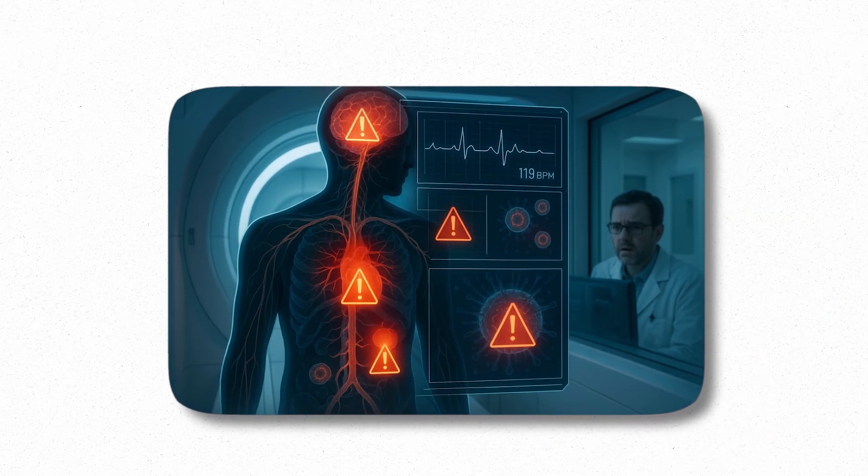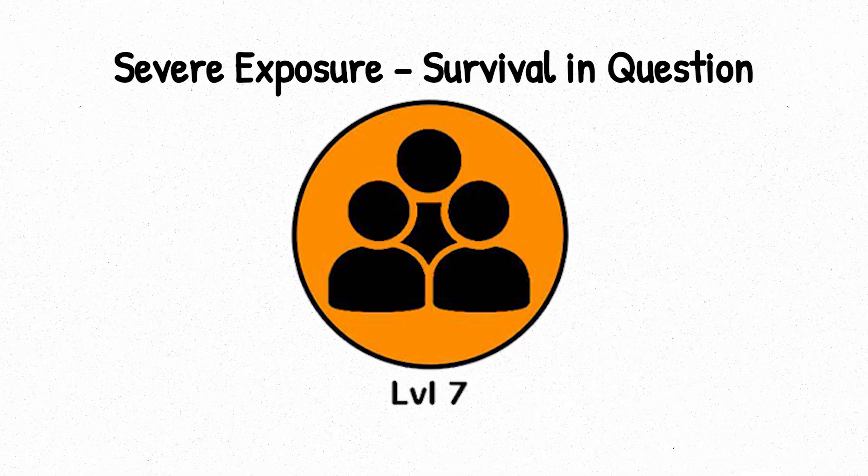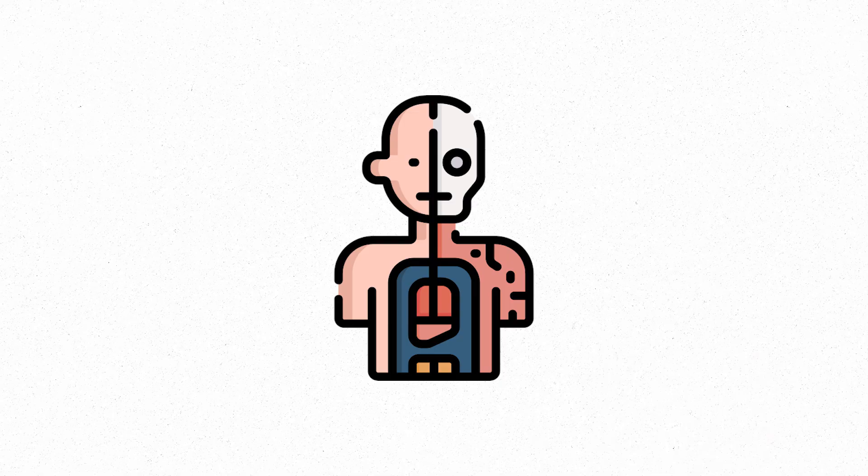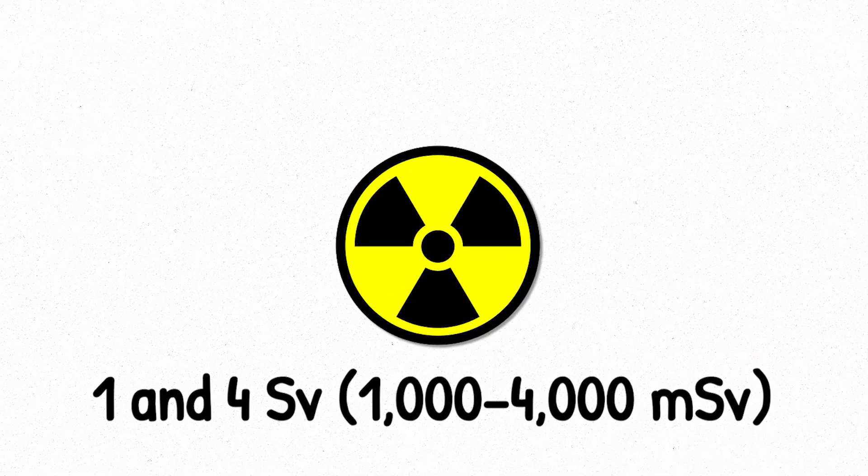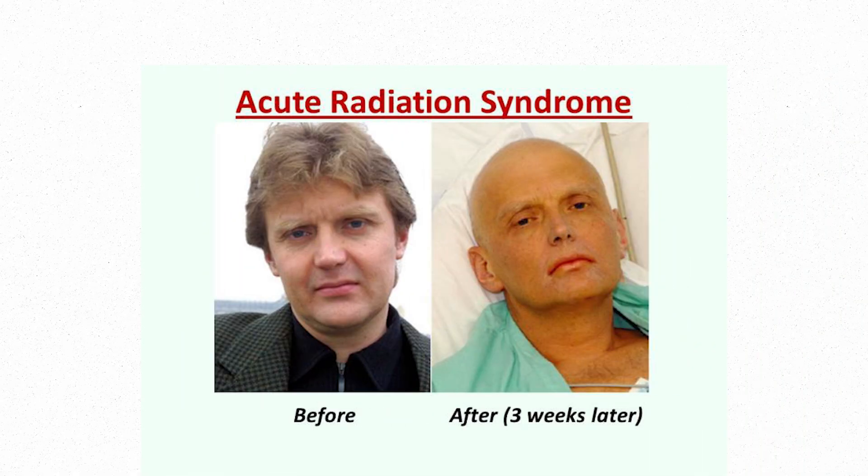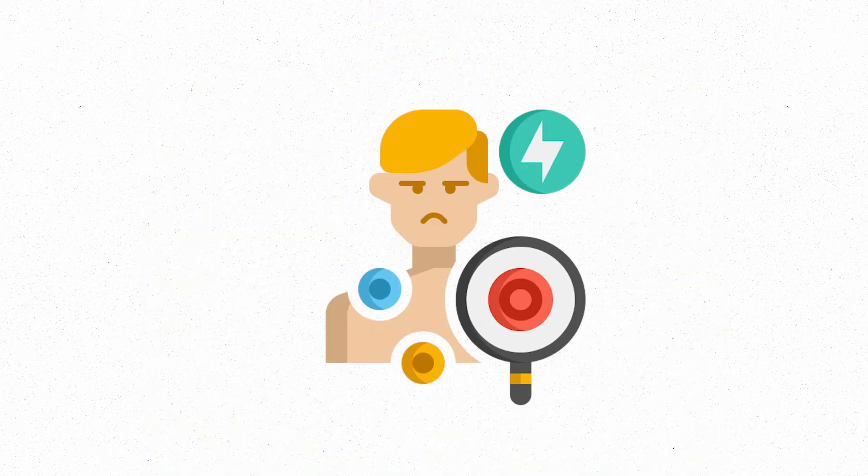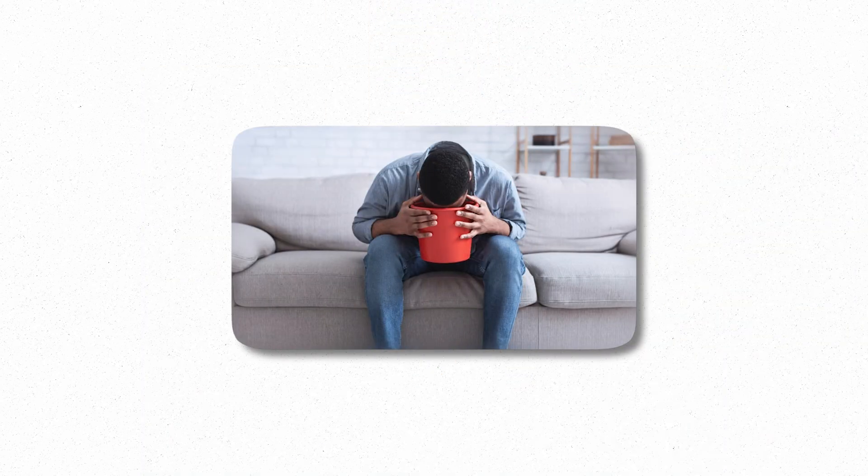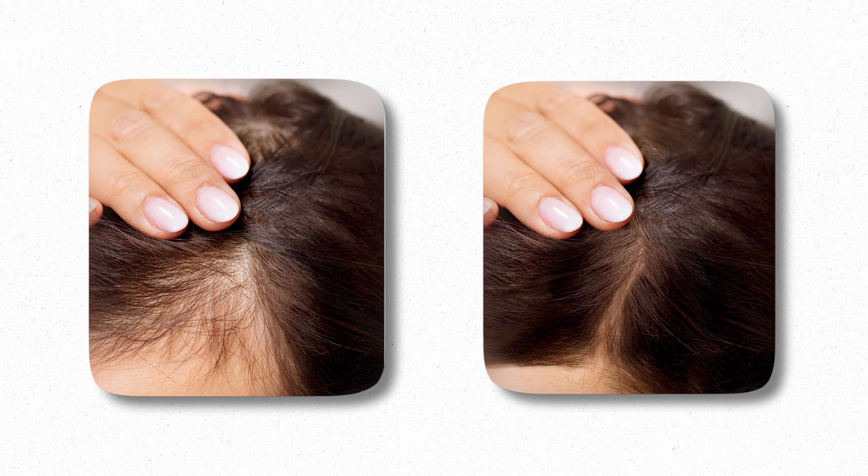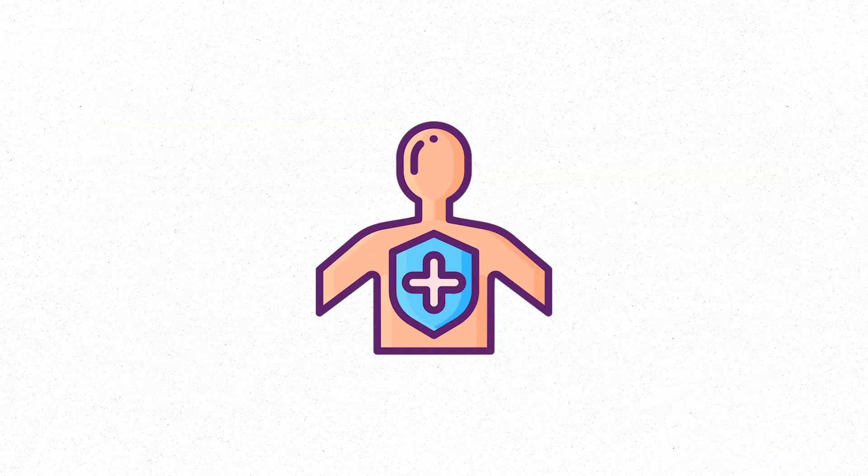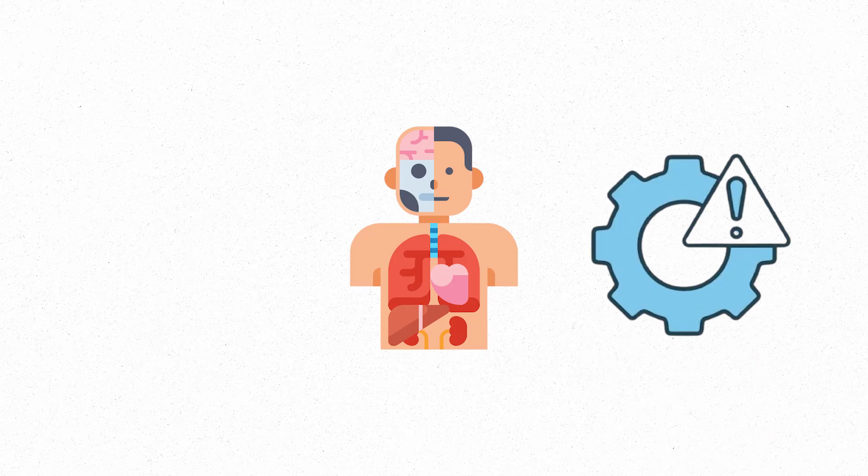Level seven, severe exposure, survival in question. At level seven, the body begins to break down in ways it can't easily recover from. Radiation doses between one and four sieverts, 1,000 to 4,000 millisieverts, trigger a violent biological response. This is where acute radiation syndrome becomes life-threatening. At this level, symptoms appear quickly, within hours. Intense nausea, vomiting, dizziness, and a sudden drop in blood pressure. Over the next few days, your hair may fall out, your immune system collapses, and internal organs start to malfunction.